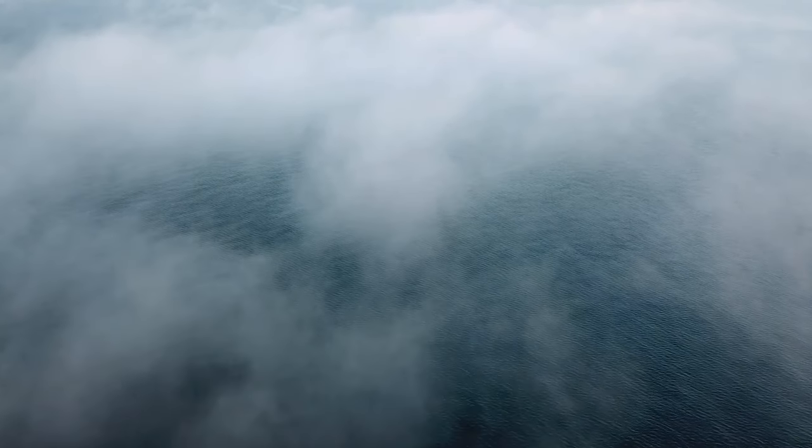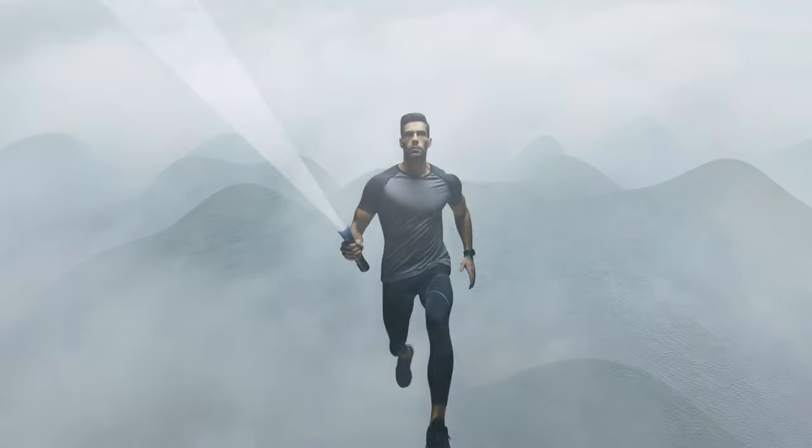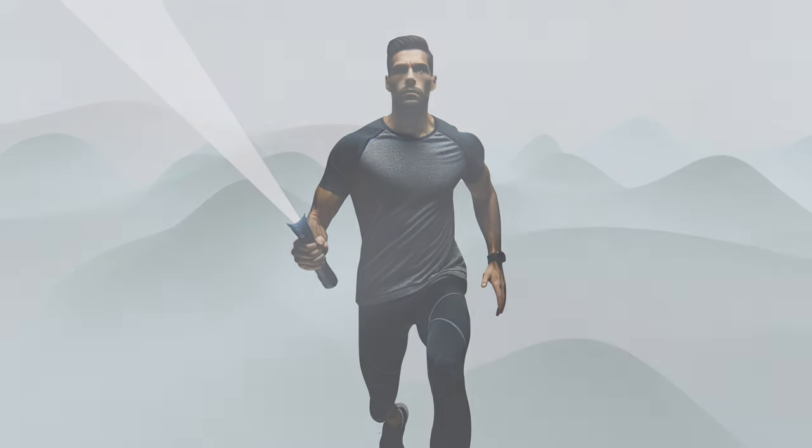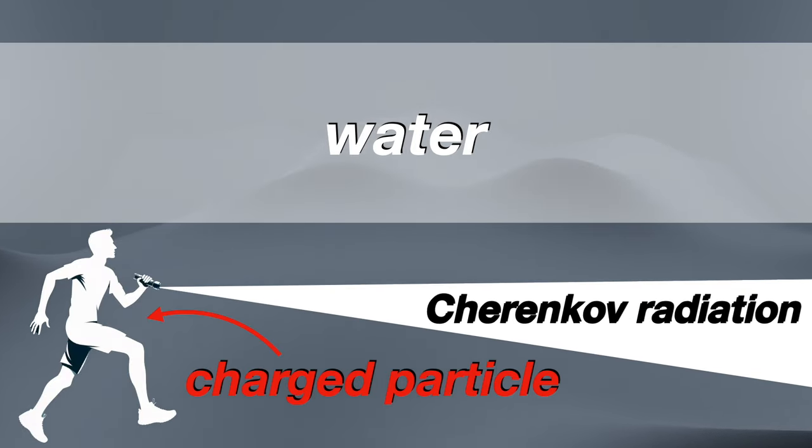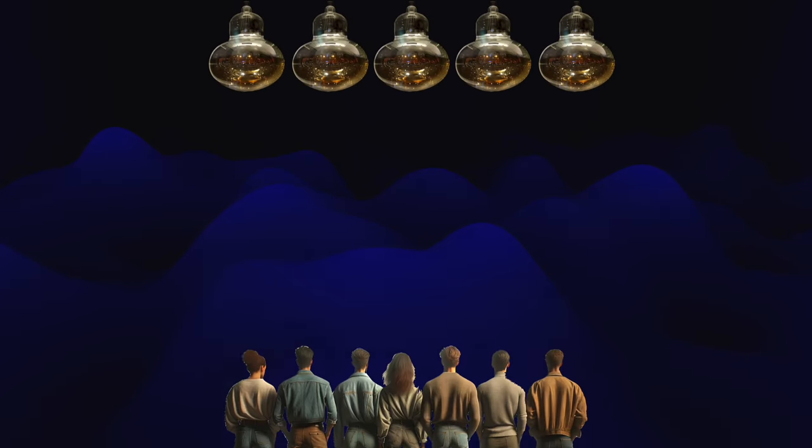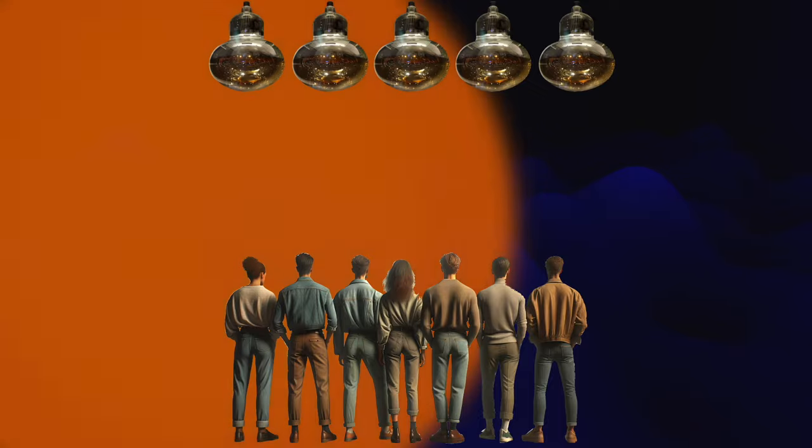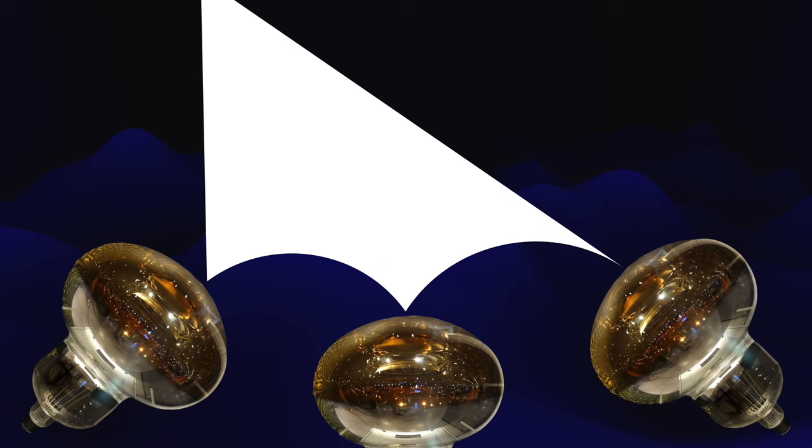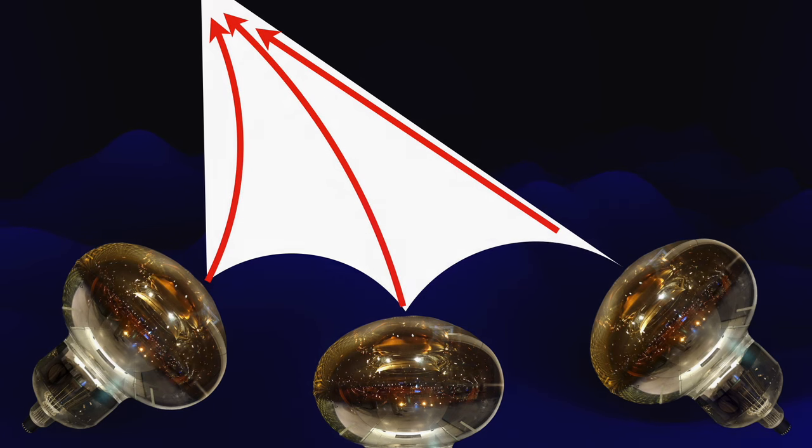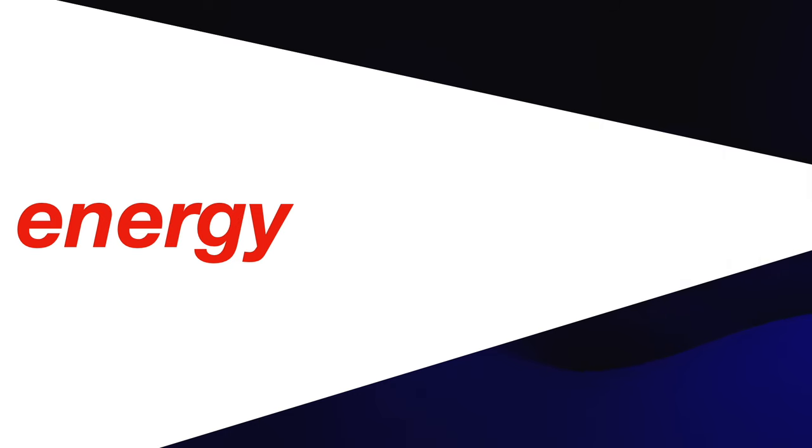To understand this with a simple parallel, imagine someone running through a foggy street at night with a flashlight. As they run, they disturb the fog and create a visible track that can be seen from a distance. In the case of Super-K, the fog is the water, the runner is the charged particle created by a neutrino interaction, and the flashlight is the Cherenkov radiation. The PMTs act as observers stationed all along the street, looking for the faint glow to pass by. When multiple PMTs detect the light, scientists can determine the direction the particle came from and some of its properties, such as its energy.